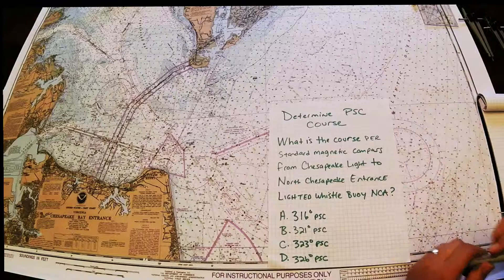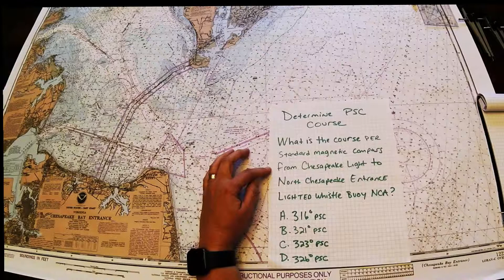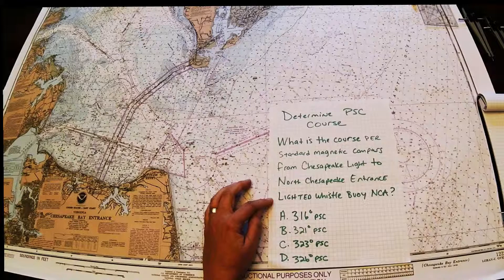So I've written down a sample problem here and it states: What is the course per standard magnetic compass from Chesapeake Light to North Chesapeake Entrance lighted whistle buoy NCA? And then it gives you four choices on the exam.